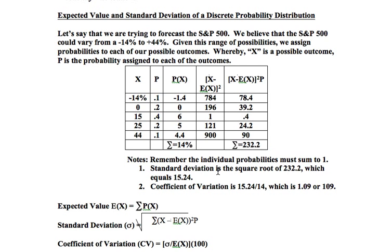So when we have Project A and Project B, we always want to select the project that has the smallest coefficient of variation, because that is the one where we have a greater certainty of earning the mean.